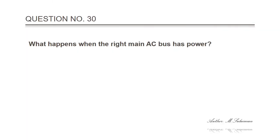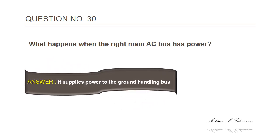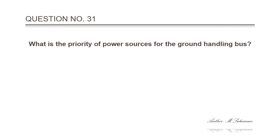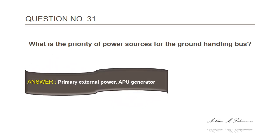Question 30: What happens when the right main AC bus has power? Answer: It supplies power to the ground handling bus. Question 31: What is the priority of power sources for the ground handling bus? Answer: Primary external power and APU.